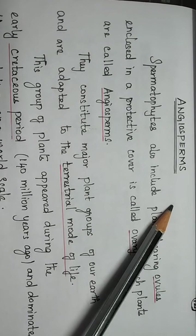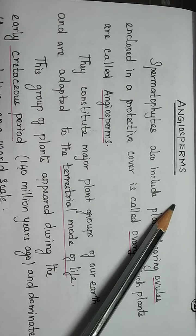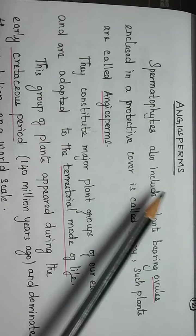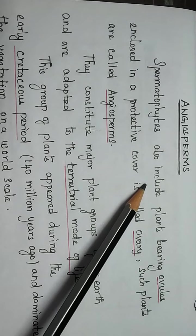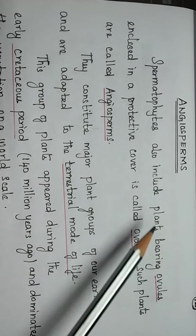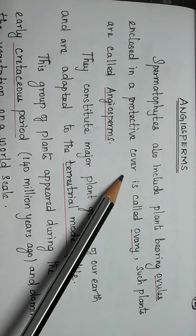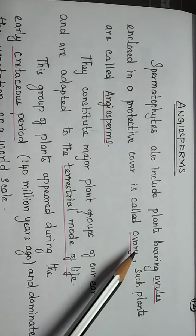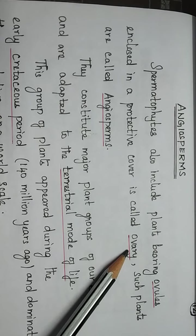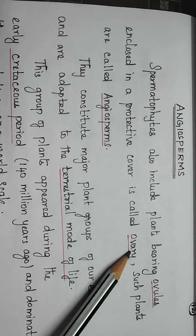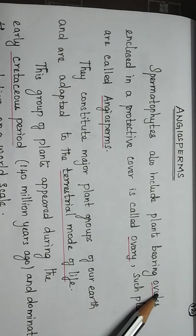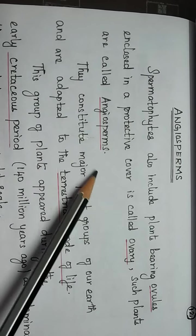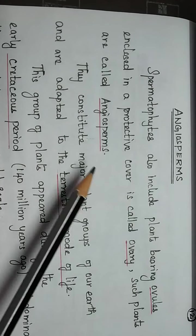Good morning students. Today we are going to see about angiosperm plants, that is called as flowering plants. Angiosperms also includes plants bearing ovules enclosed in a protective covering called as ovary. The ovary develops into fruit, and inside the fruit we can see the ovules — that is, seed is present. Such plants are called angiosperm plants.